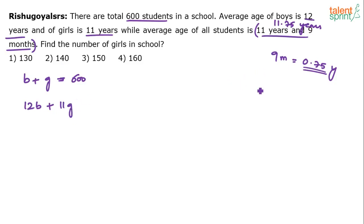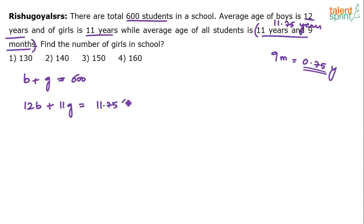Average equals sum divided by number of persons, so sum equals average multiplied by number of persons. So 12b plus 11g equals 11.75 times (b plus g), which equals 11.75 times 600.